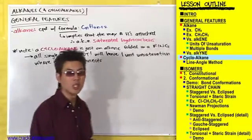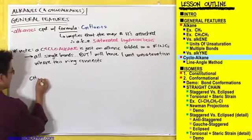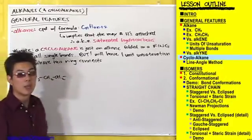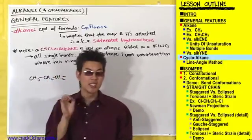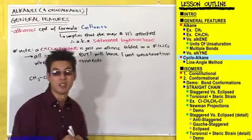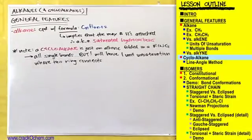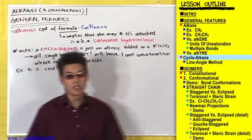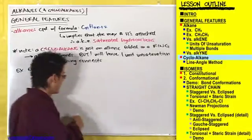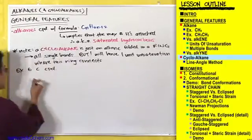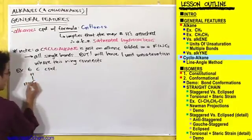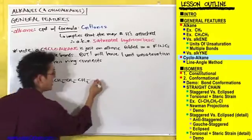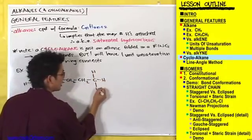Up to this point, we've only been seeing straight-chain alkanes — for example, CH3 connected to a CH2 connected to a CH2, et cetera, where these carbons are in a straight chain. But these carbons can also be folded up into rings. Let's look at a six-carbon example. The straight-chain form will look like this: a C connected to three hydrogens, connected to CH2, CH2, CH2, CH2, and then a C connected to three hydrogens.